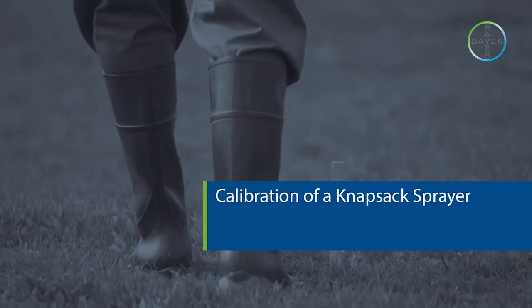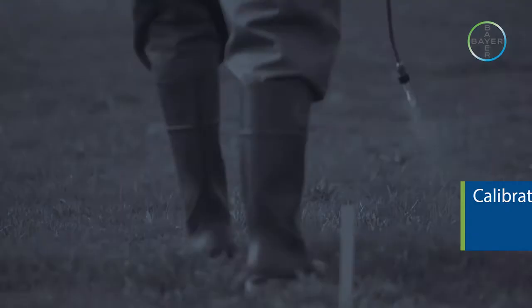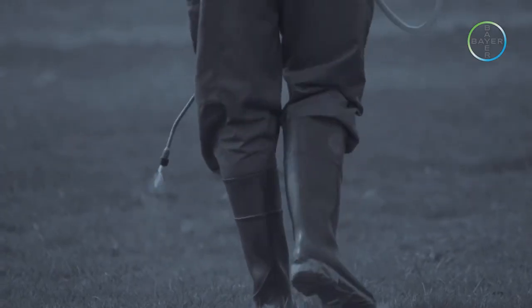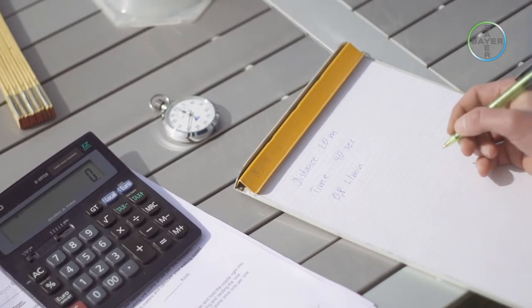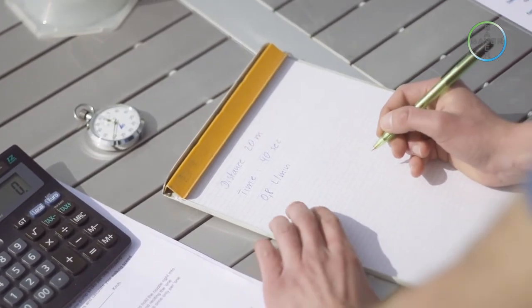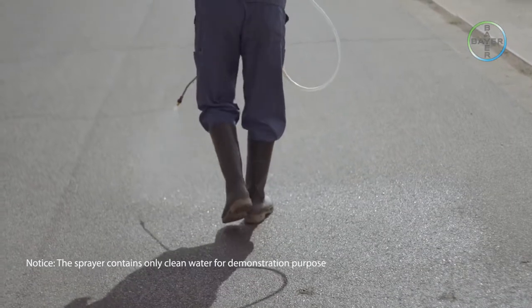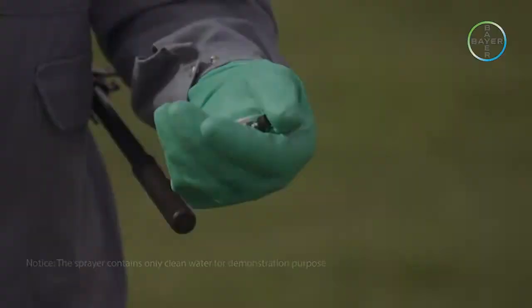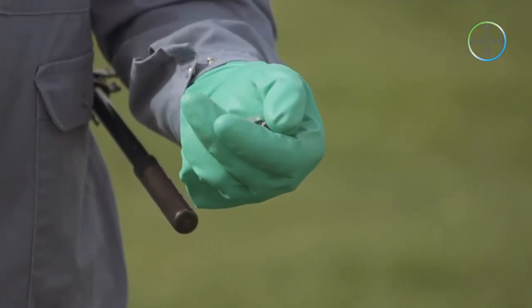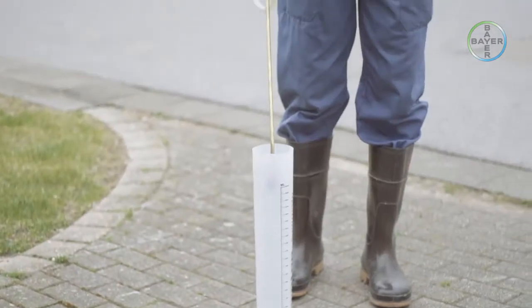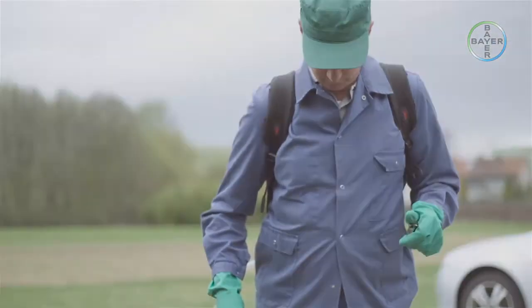Calibration of a knapsack sprayer. To ensure crop protection products are applied at recommended dose rates per hectare, accurate calibration and correct use of the spraying equipment is essential. This short movie will demonstrate how a simple knapsack sprayer can be calibrated before being used in the field.